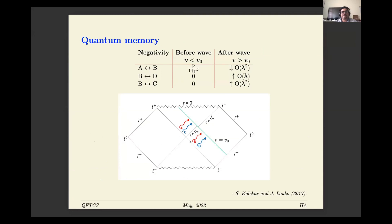A and B are correlated, and similarly C and D are correlated, but there is no correlation between the red and blue pairs — no correlation between B and D, or A and C. But because of this BMS-type shock wave, the entanglement changes. In this perturbative calculation, we see that entanglement changes once the wave passes: entanglement between pairs degrades to perturbative order lambda squared, while entanglement between outgoing Hawking pairs increases to order lambda. This shows how correlations in Hawking pairs can be modified using BMS-type symmetries.